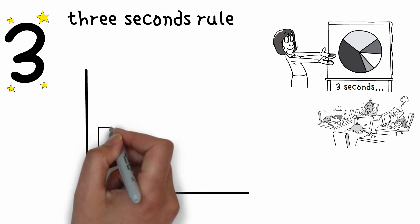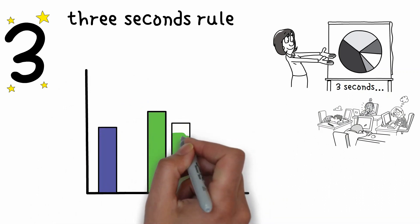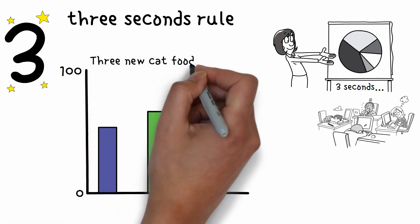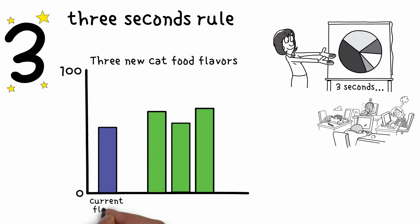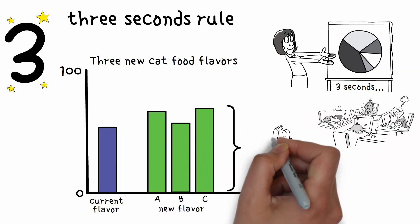Let's take the example where you want to show the difference between data values and the performance of three solutions for improvement, say for three new cat food flavors as compared to the current flavor. Most of us would show all the data and expect that our viewer would easily see the differences.